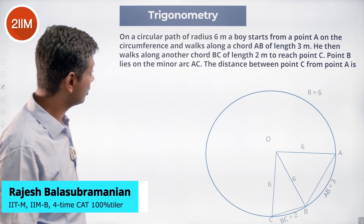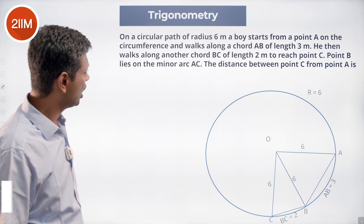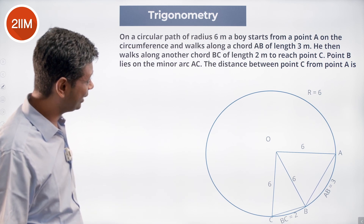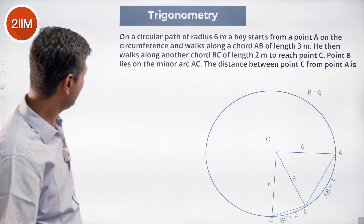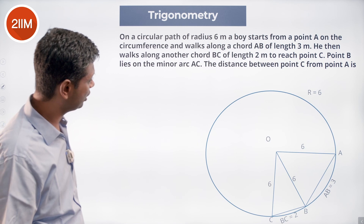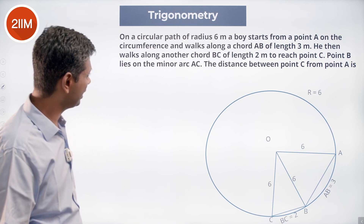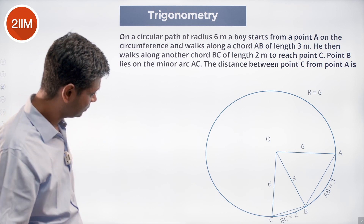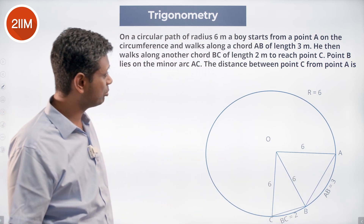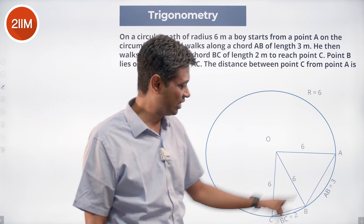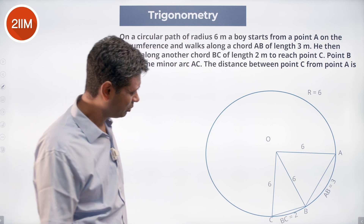A circular path of radius 6 meters. The boy starts from point A on the circumference and walks along chord AB of length 3 meters. He then walks along another chord BC of length 2 meters to reach point C. Point B lies in the minor arc AC. The distance between point C and point A — we need to find AC.